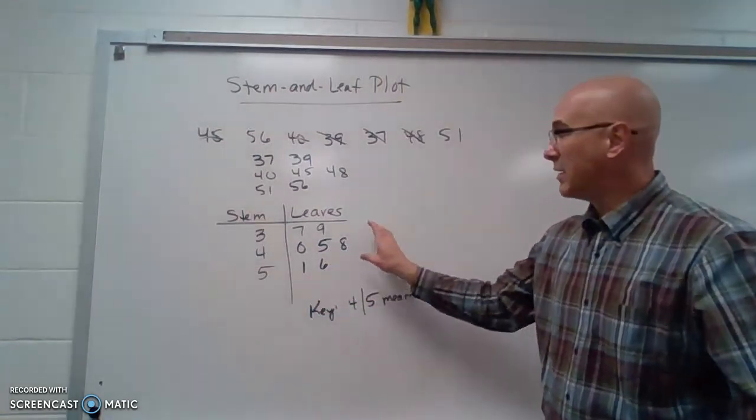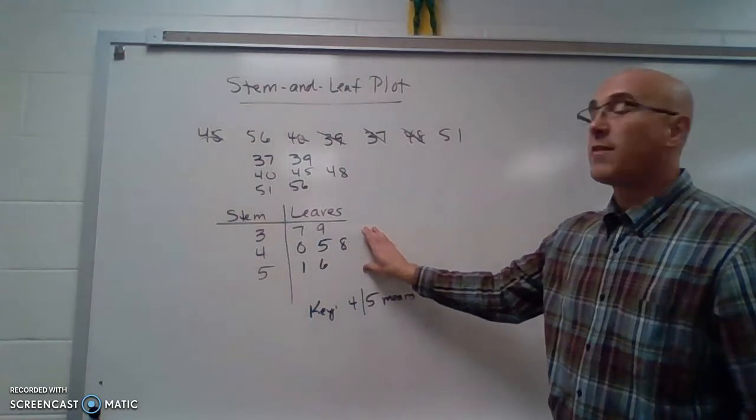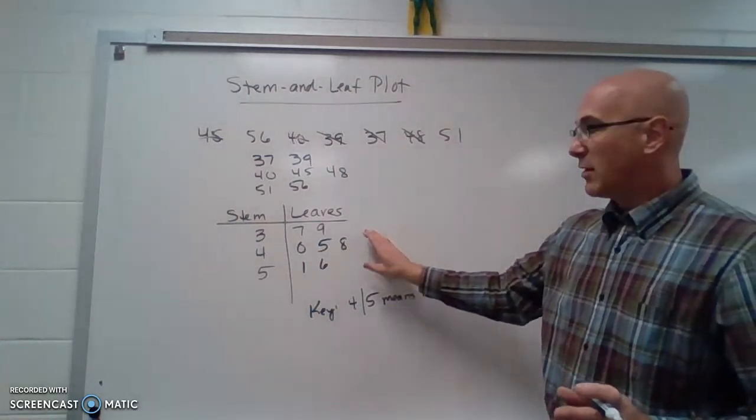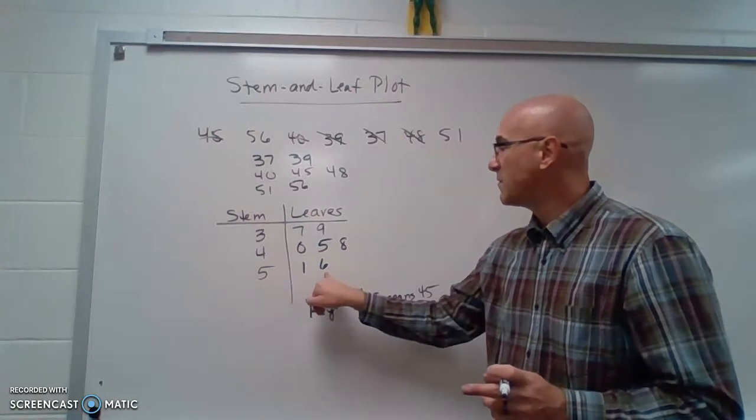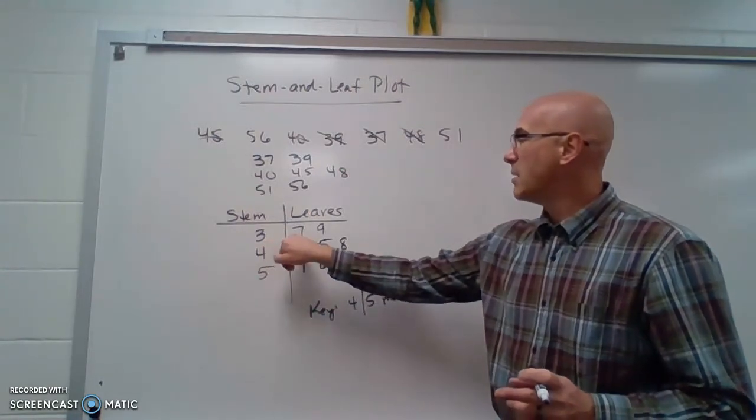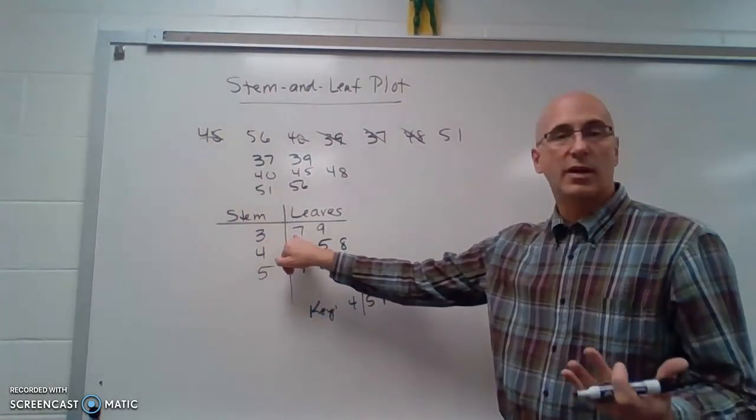So from this we can do things like we could find the range. We can find out what the biggest number is. In this case it's 56, and the smallest number 37, and we subtract it and we get our range.